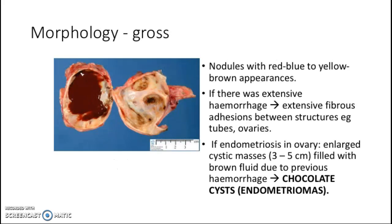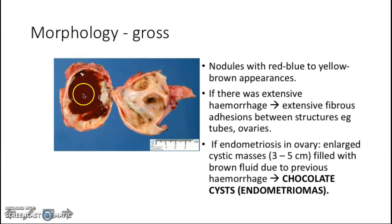Grossly, endometriosis presents as a nodule with red and blue to yellow-brown appearance. If there is extensive hemorrhage, you will see fibrous adhesions between structures involved, for example between tubes and ovaries. If there is endometriosis within the ovary, it presents as a large cystic mass measuring 3 to 5 cm with brown fluid due to previous hemorrhage. This is called a chocolate cyst or endometrioma.